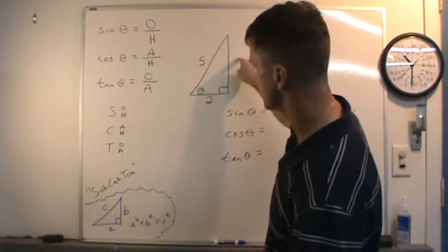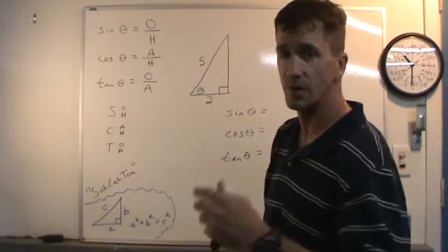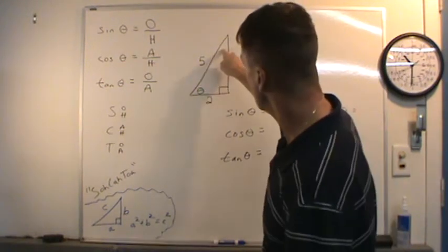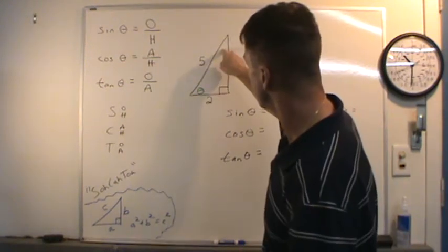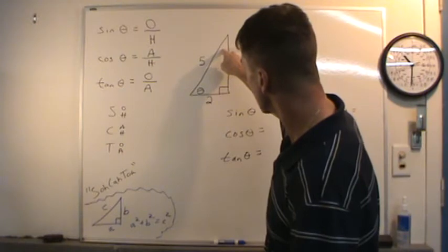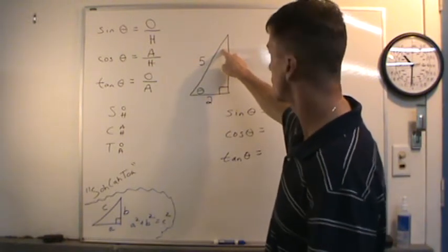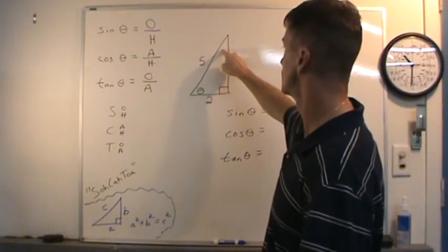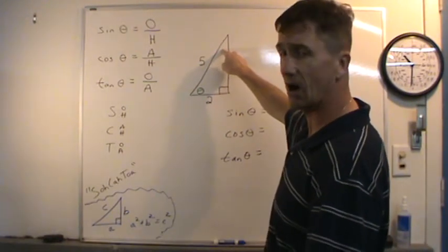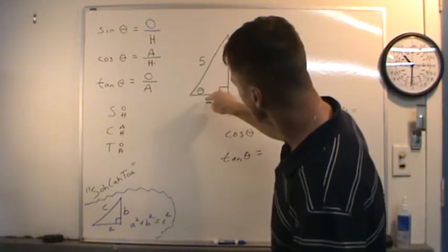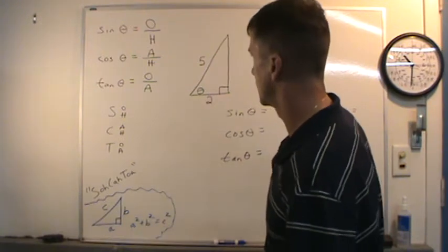Notice this side is opposite this angle. So if we refer to that angle up here with a different variable such as the Greek letter alpha, this would be the opposite side.